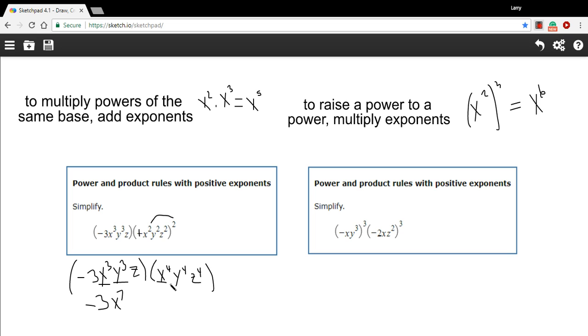For the y, we have y to the third and y to the fourth, so that's going to be y to the seventh as well. And then for the z, we have z to the first and z to the fourth, so that's going to be z to the fifth power. And that is our answer on that one.